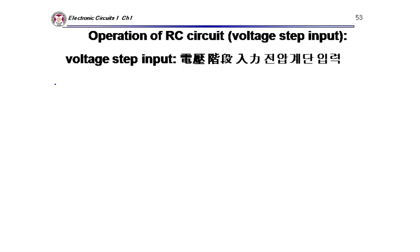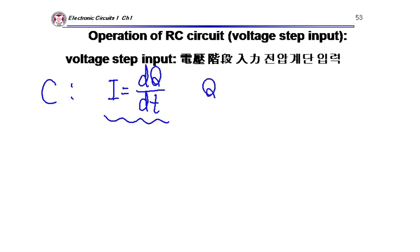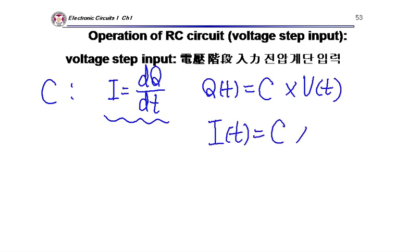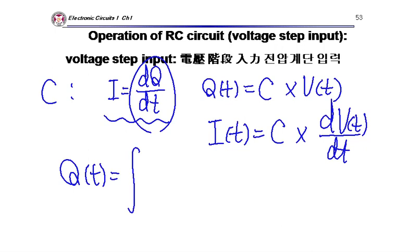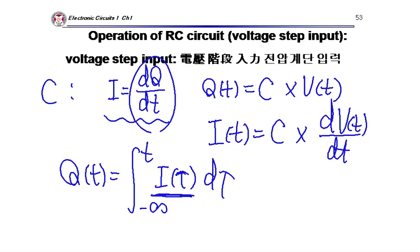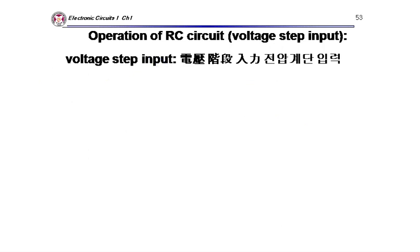To summarize for the capacitor: the general equation is I = C × dV/dt. For a linear capacitor, Q = CV (constant C). Also, Q = ∫I dt — if I integrate all current flow, I get the stored charge. Let's look at the operation of a simple RC circuit.